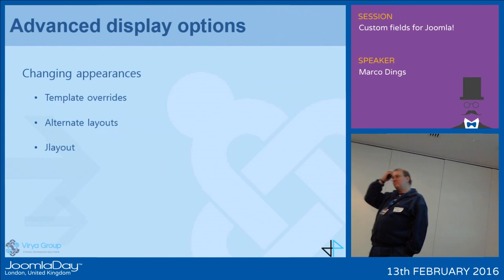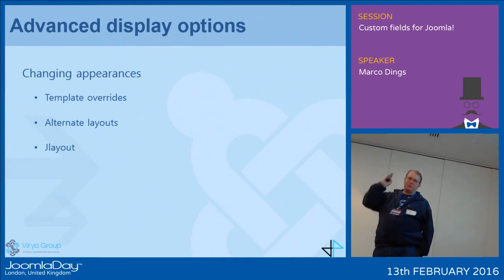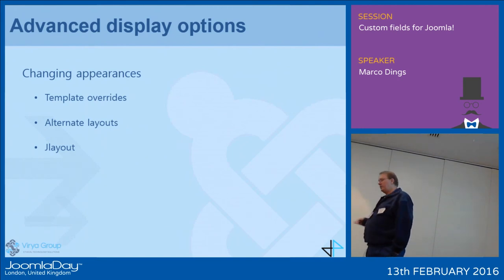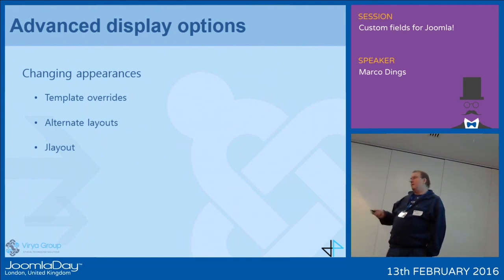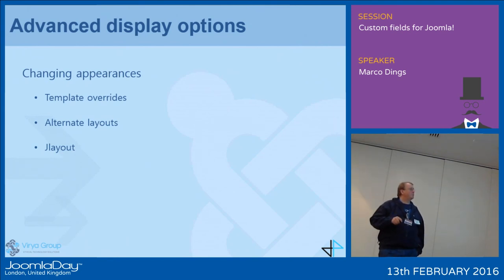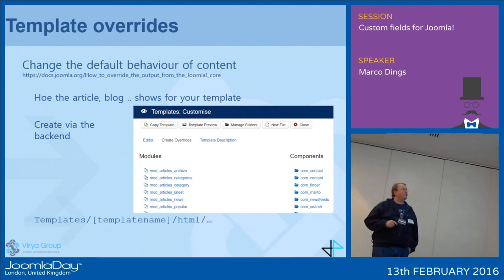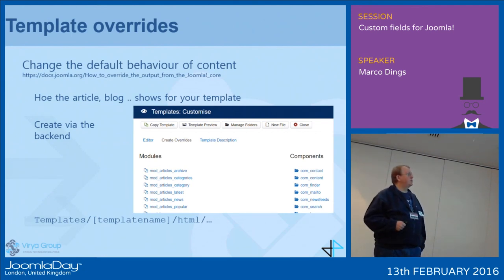Okay, we've got the fields in, we know where to display them, but for sure you'll want the field to display differently in one place than in another. So what can you do? We've got some basic stuff — it's all Joomla stuff. You can do your template overrides. Basically, in your template overrides, you change the default behavior of your content. It's typically used in themes and templates to change the look and feel, and you can change those of course.